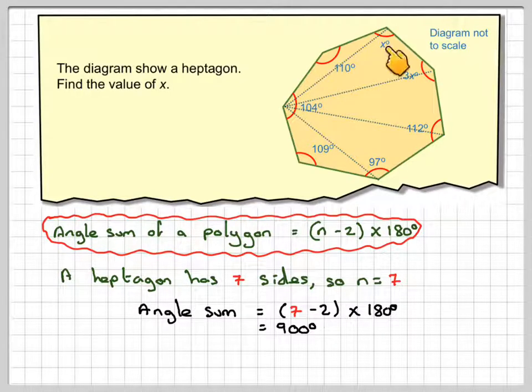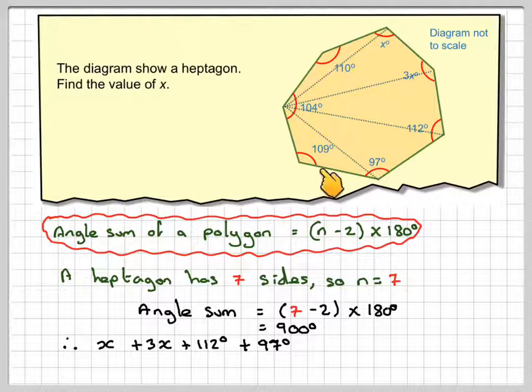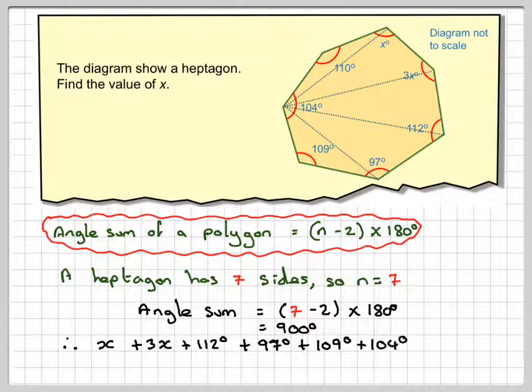So making an equation, starting here and then going around this way, we're going to have x plus 3x plus 112 plus 97 plus 109 plus 104 plus 110 will be equal to 900.